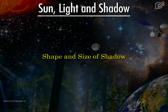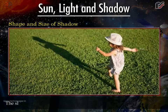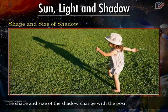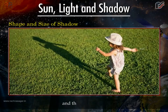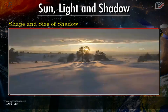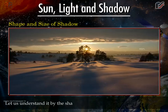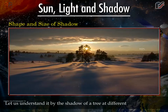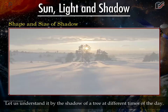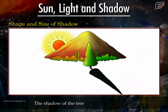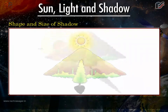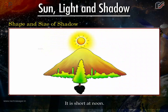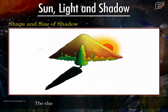Shape and size of shadow. The shape and size of the shadow change with the positions of the object and the light source. Let us understand it by the shadow of a tree at different times of the day. The shadow of the tree is long in the morning, short at noon, and long again in the evening.